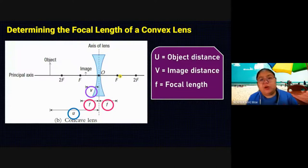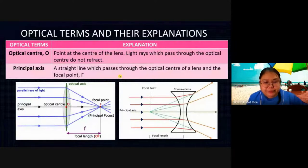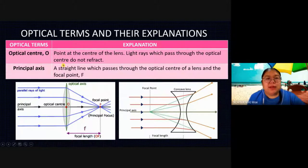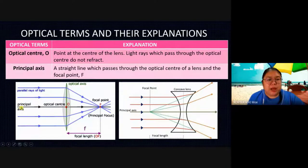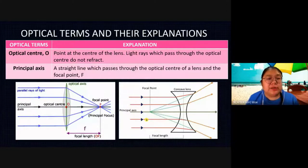After introducing all these things, we go to the next part. O — we every time say about O — we call it the optical center. It is the point at the center of the lens. The light ray which passes through the optical center does not refract — it goes straight forward without any bending.